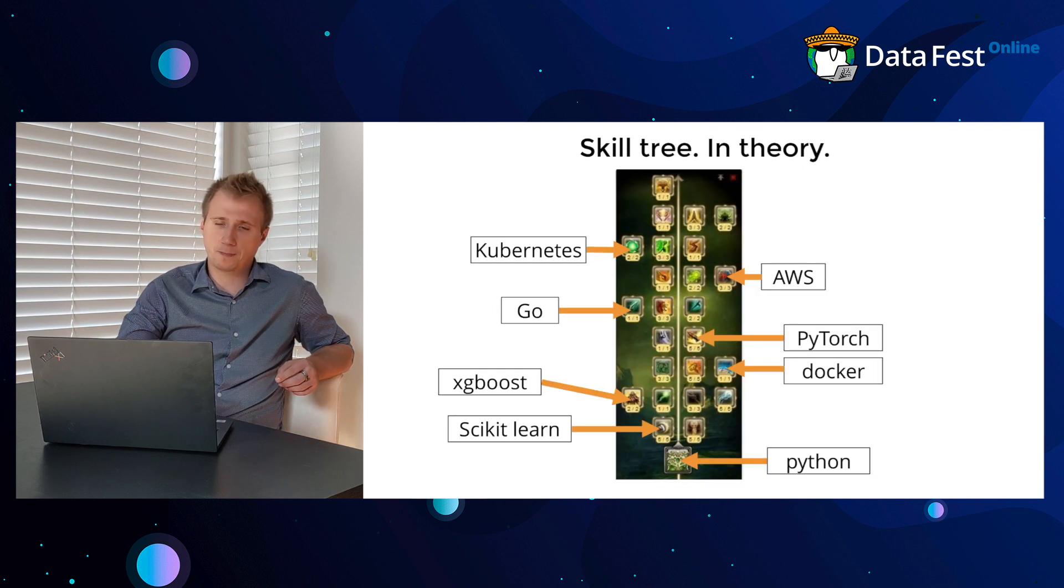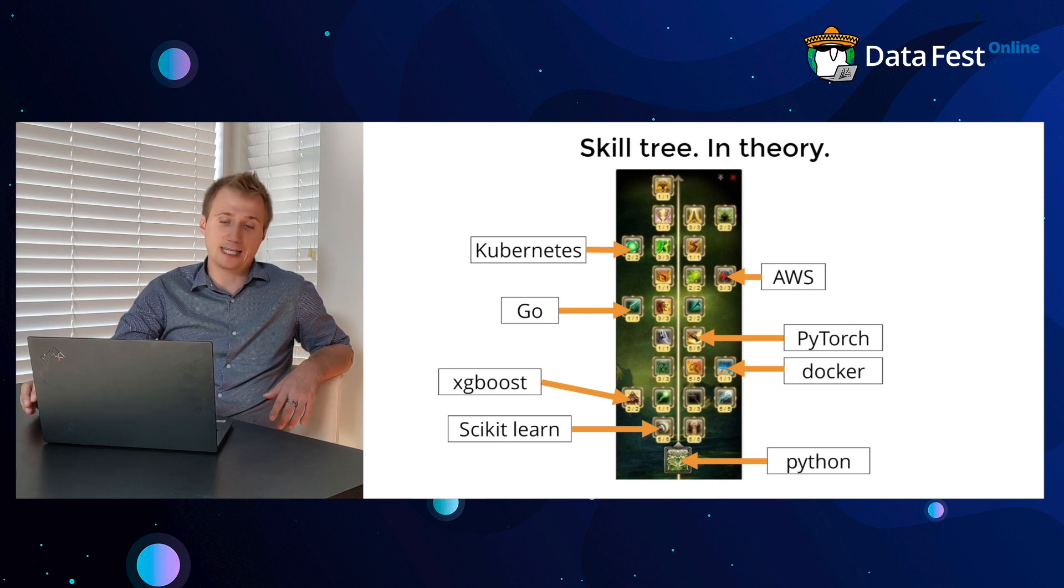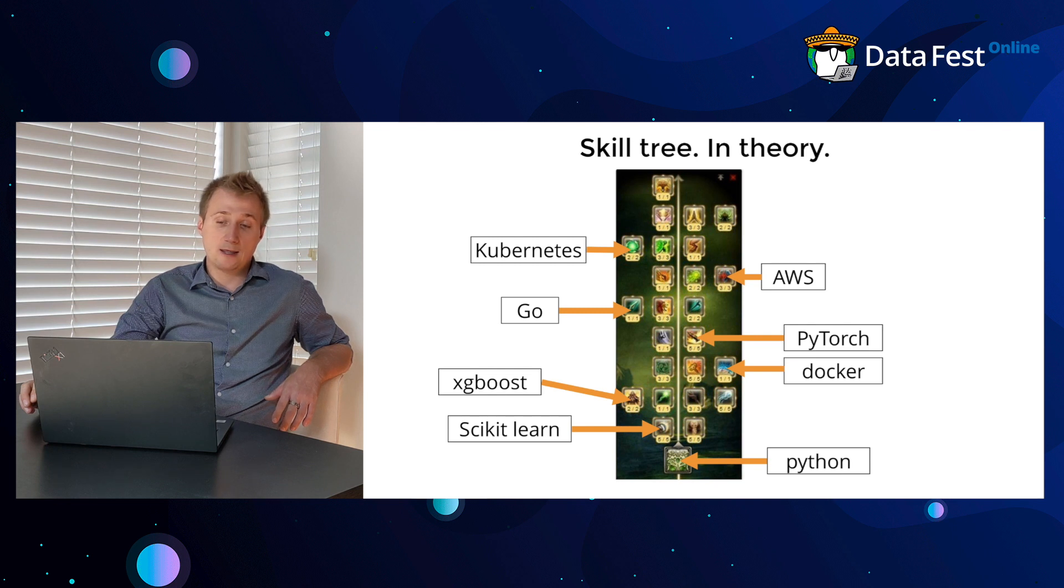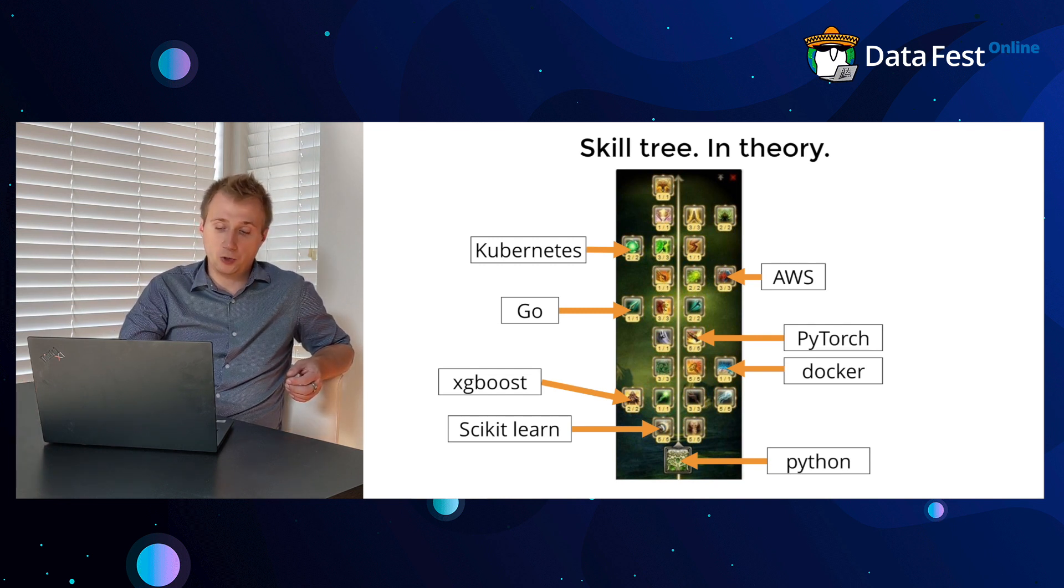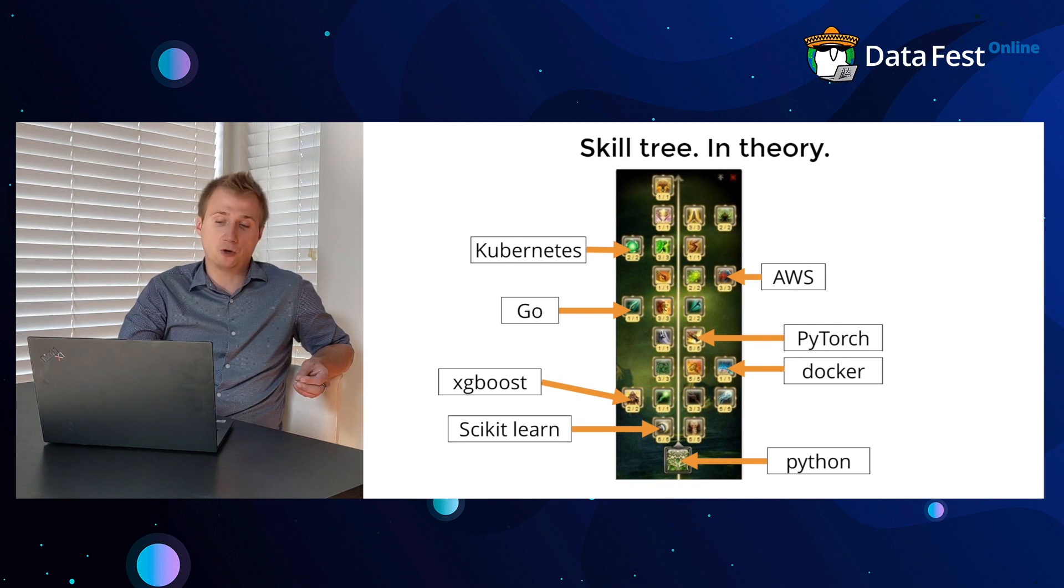So what is the issue? Many people, including me a couple years ago, assumed that your skill development career path looks like this: first you know some programming language like Python, then you master libraries like scikit-learn and xgboost, then you look at the sides and maybe you're required to make your work more reproducible. If you master Docker, then deep learning PyTorch TensorFlow, you want to build services, you invest in Go, and it goes on.